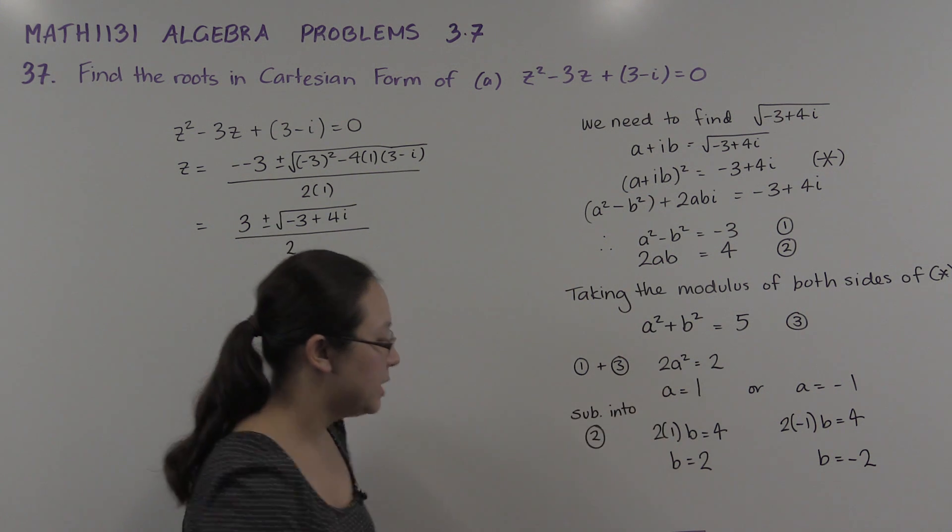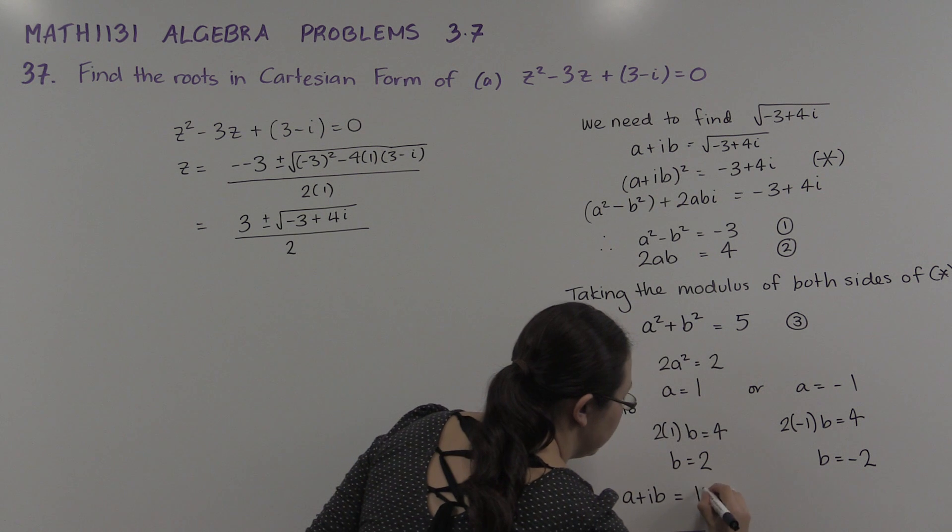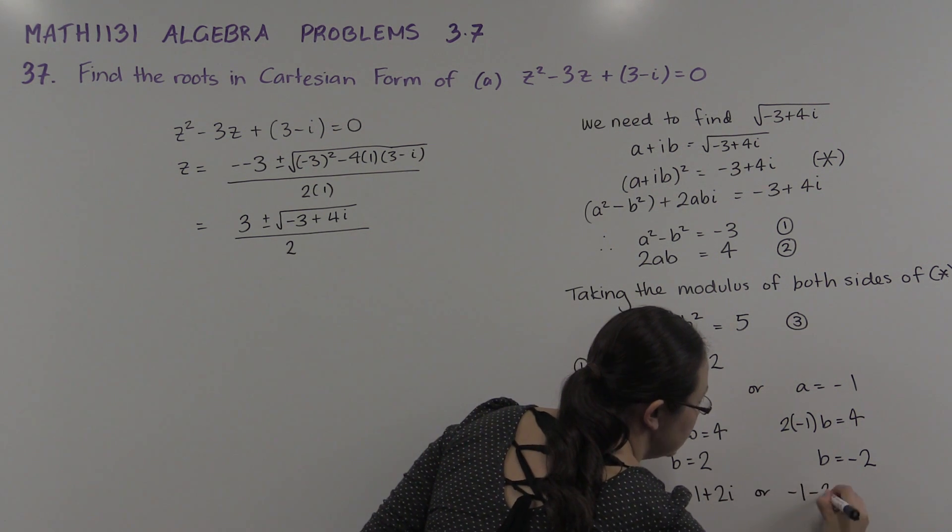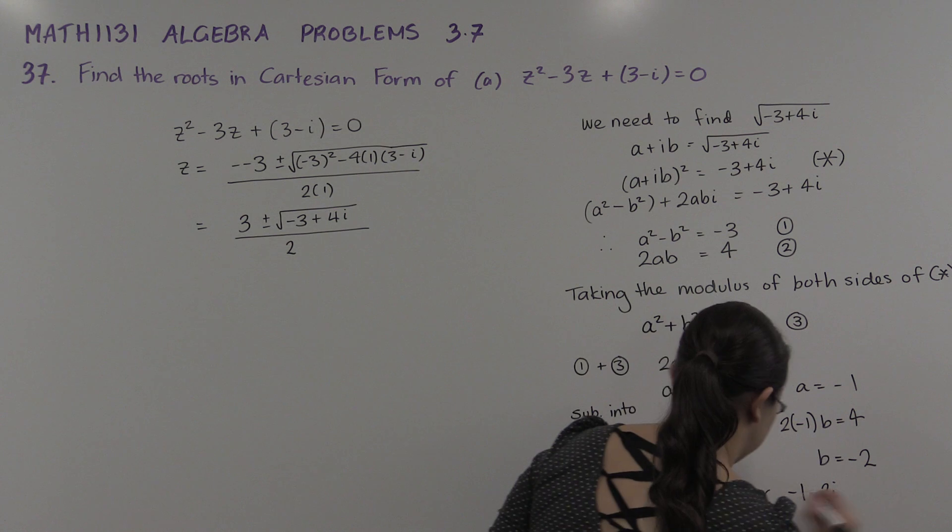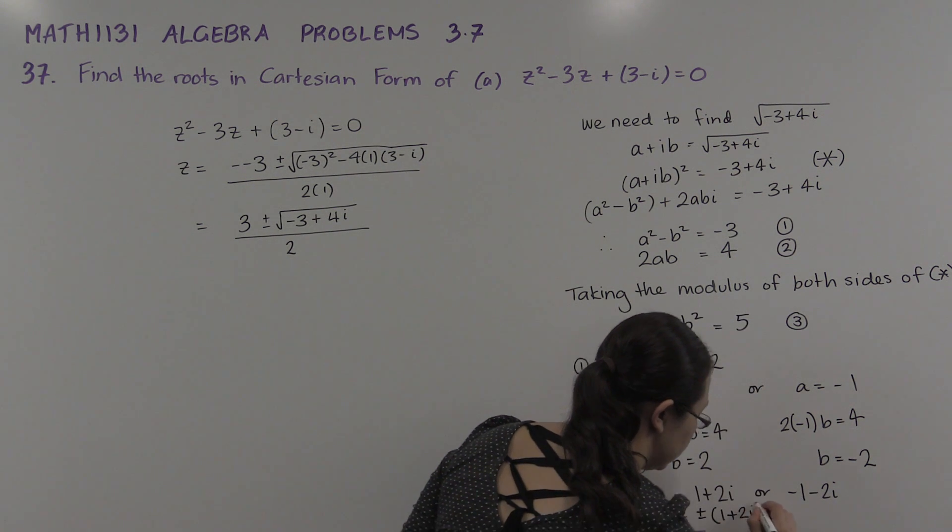So we have our a + ib. So we have 1 + 2i or -1 - 2i. That's a + ib. That is ±(1 + 2i).